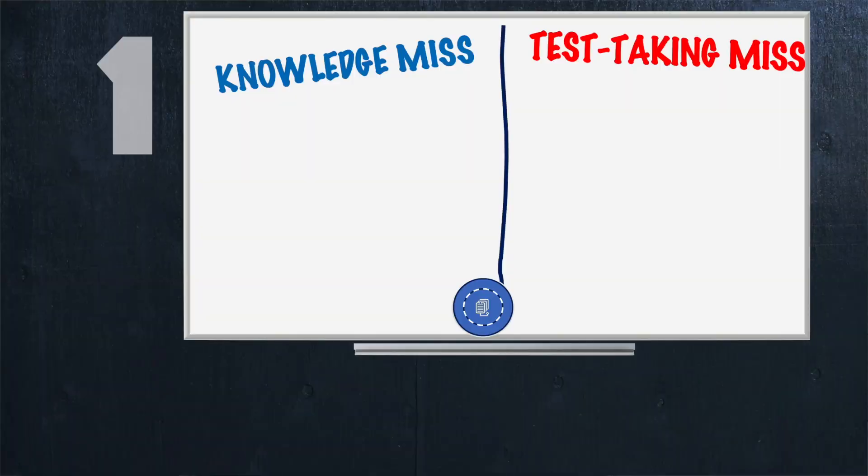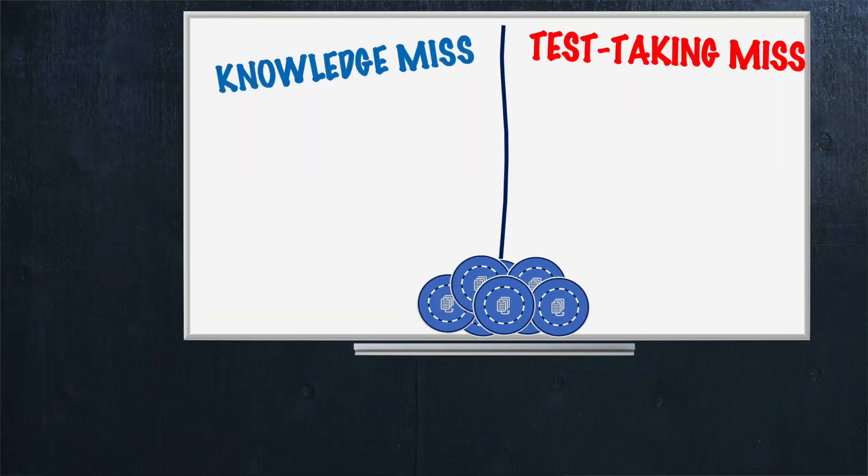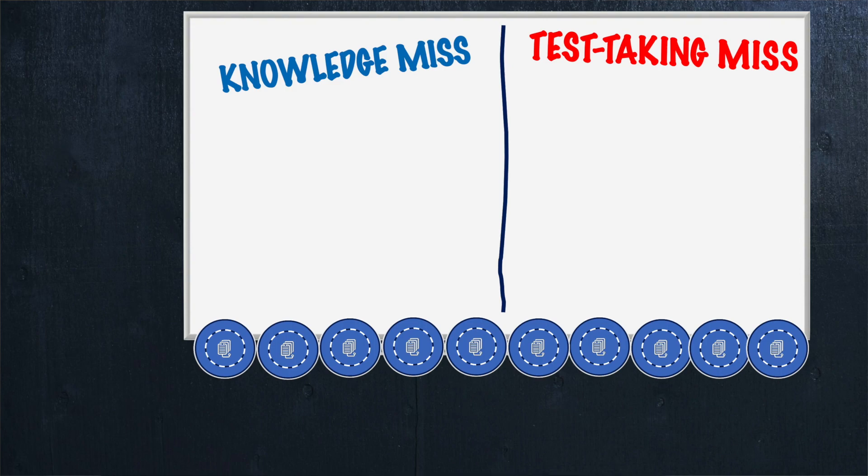So let's say you do a bunch of practice questions — 20, 30, however many — and say you missed 10. Think of a representative 10, spaced out over multiple sets of missed questions. You take those 10 misses, read the answer explanations, and determine how many are on the knowledge side versus the test taking side. Think broadly, representatively, and don't overthink it. Tell me your ratio.